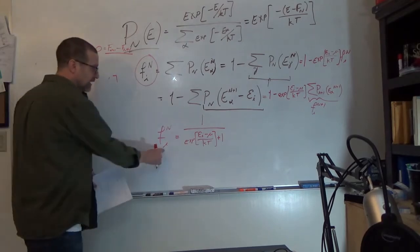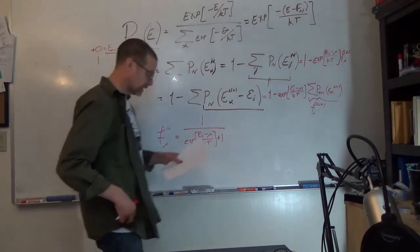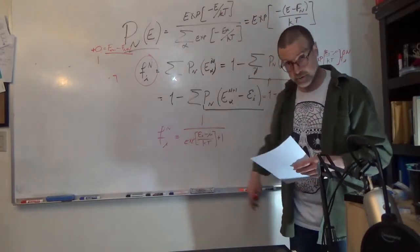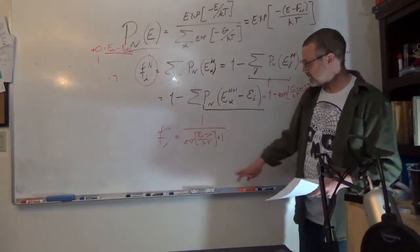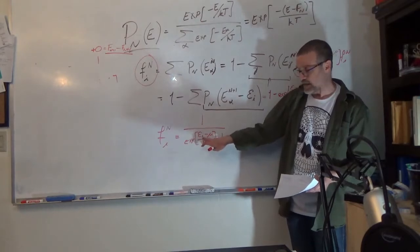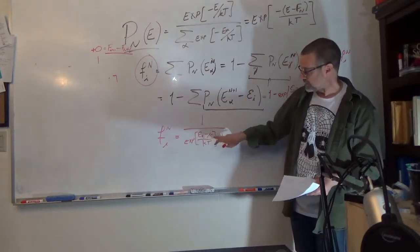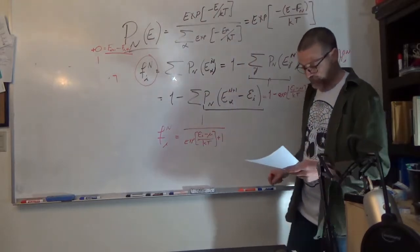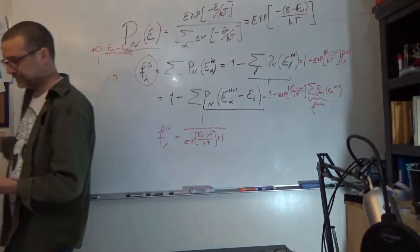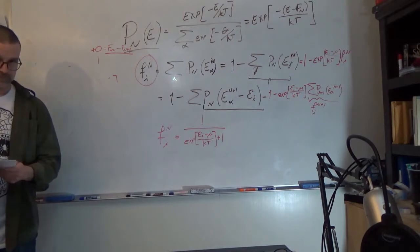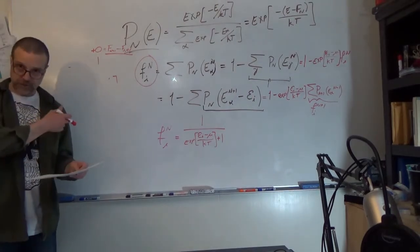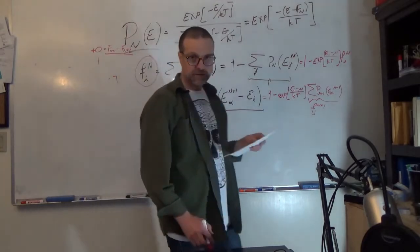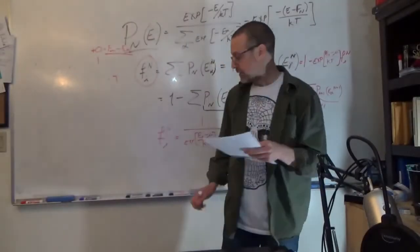We can now talk about the probability of having a particular state occupied in terms of the energy of that state and the chemical potential, which we know is the Fermi energy. We've solved the statistical distribution — now let's look at what the eigenstates look like for this problem.